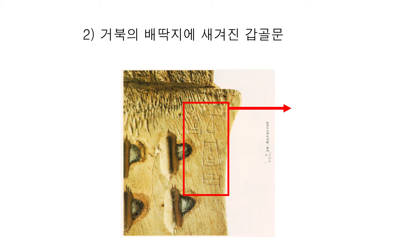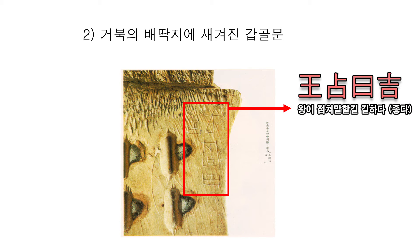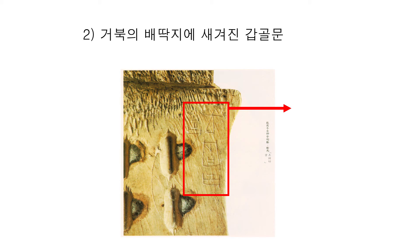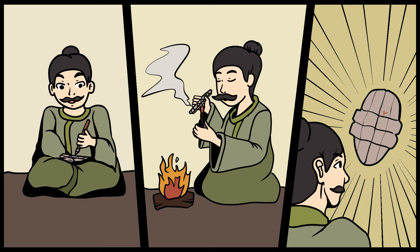상나라 때 사람들이 갑골문에다가 글자를 새겼는데 '왕, 점, 왈, 길'이라고 쓰여 있어요. 왕이 점쳐 말하기를 길하다, 좋다는 것이죠. 이 점을 어떻게 치냐 하면 주로 거북이의 배딱지나 소의 어깨뼈를 잘 손질한 다음에 구멍을 팝니다. 판에 넓게 홈을 하나 파고 반대편으로 깊게 홈을 하나 팝니다. 거기다가 산대가지에 불을 붙여서 불로 지지면 홈을 판 흔적에 따라 가로로 균열이 납니다. 그 균열을 보고 당시 정인들이 길흉을 판단했죠.